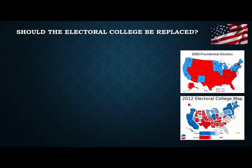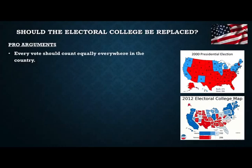Is the Electoral College a fair system for electing the president? There's a lot of controversy over this, especially considering the 2000 election. Those who say it should be replaced argue we should create a system where all votes across the country are counted and whoever wins the most votes becomes president. People who argue the Electoral College should be eliminated believe every vote should count equally everywhere — a vote in Oregon should be exactly the same as a vote in North Dakota. That's a fairly strong argument.